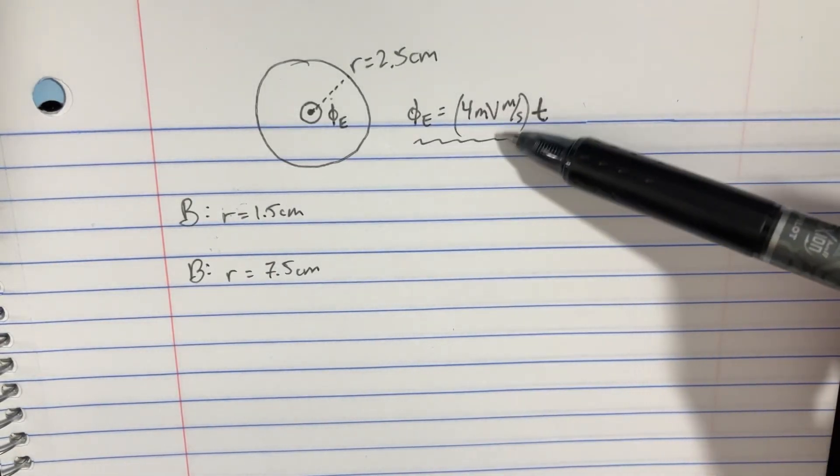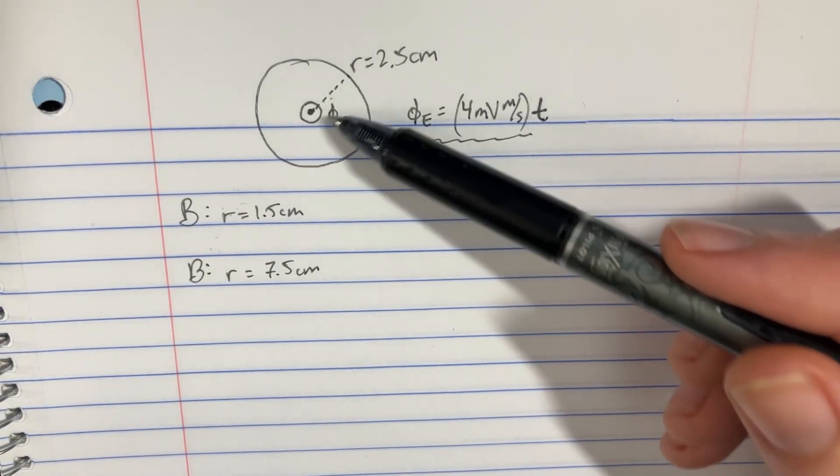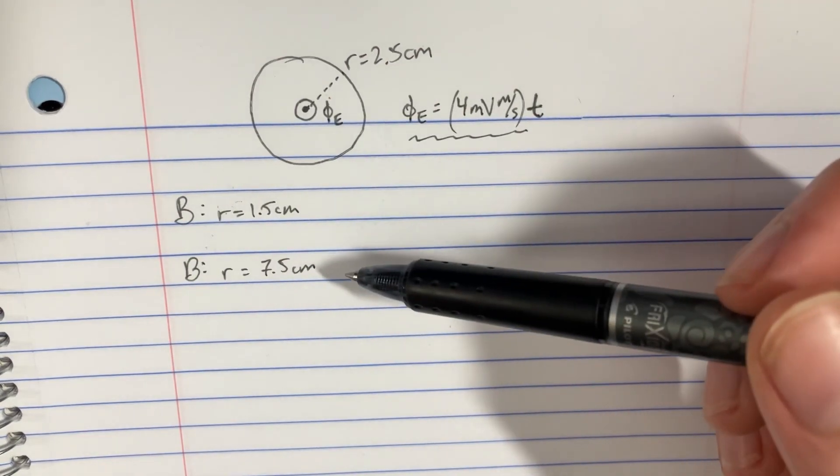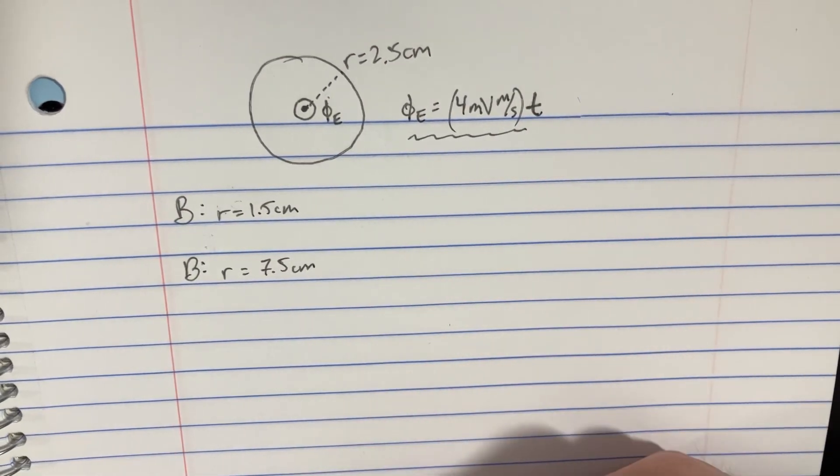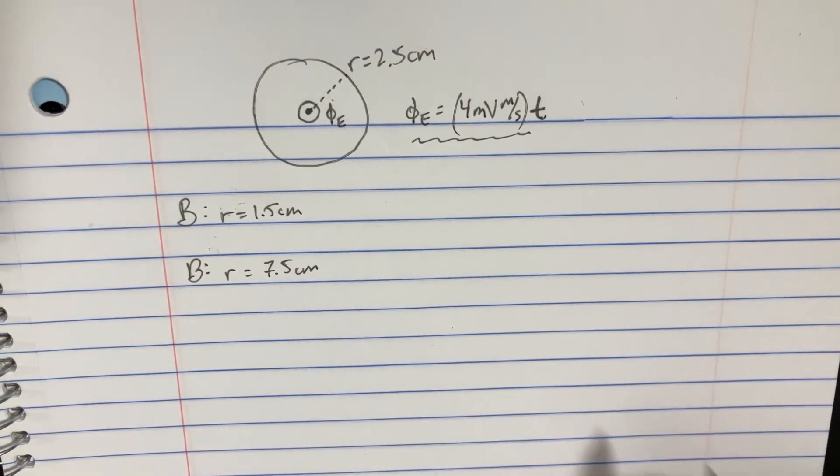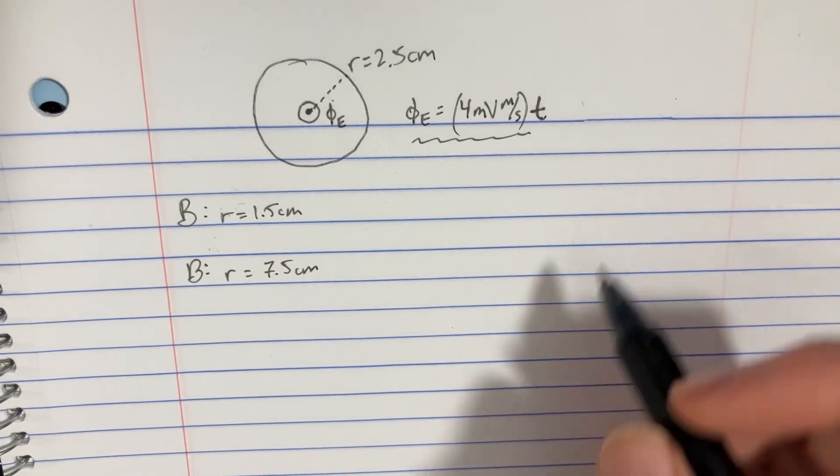We have a loop and a changing electric flux going through that loop, and we're asked to find the magnetic field at a couple of different distances. Now in order to do that, we need to use Ampere Maxwell's laws.